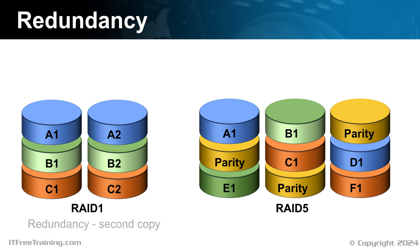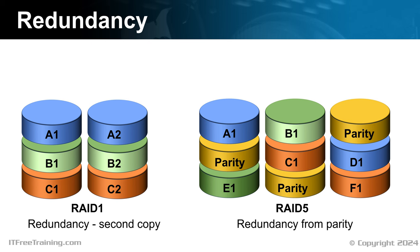RAID 1 gets its redundancy from keeping a second copy of the data. RAID 5 gets its redundancy from storing parity. A common method is to count the number of 1 bits and set the parity based on the count being odd or even. When a storage device fails, the 1 bits are counted on the remaining devices and compared with the parity value. This tells the RAID if the missing drive was a 1 or a 0.